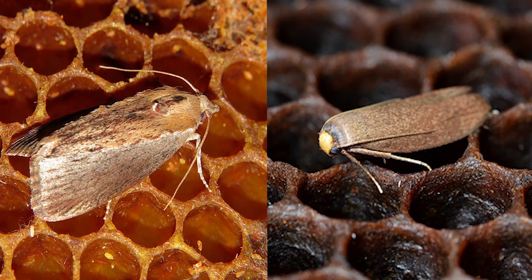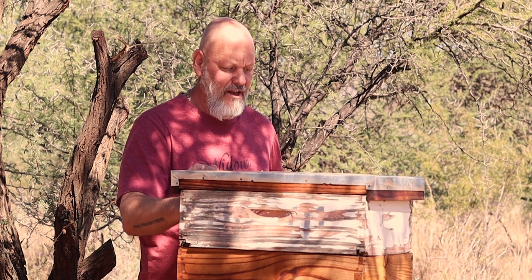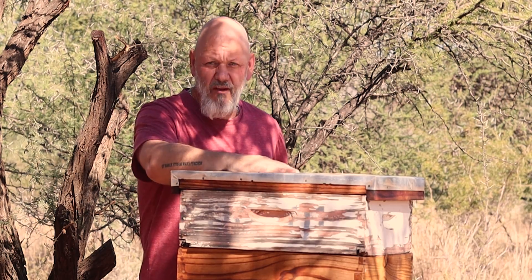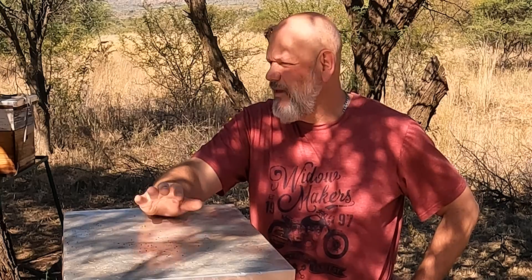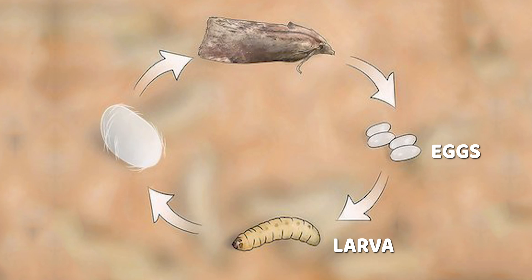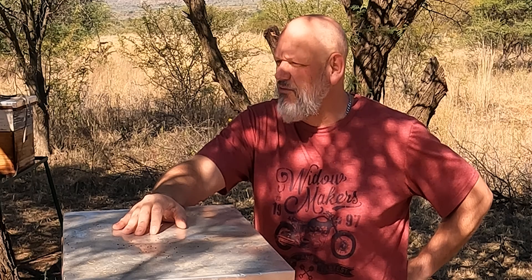There are two main species of wax moth: the lesser wax moth and the greater wax moth. They are commonly found in beehives and attracted to beehives — this is where they have their full life cycle. They have the normal life cycle that a butterfly has: an egg, a larva, then they pupate, and then the moth — the normal metamorphosis that any moth or butterfly has.